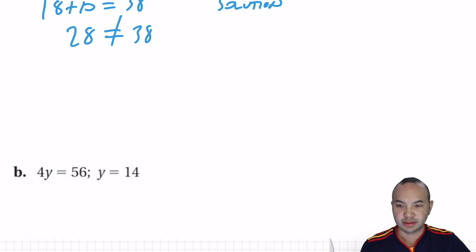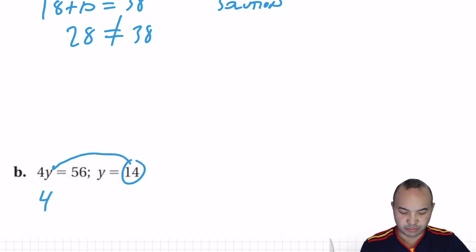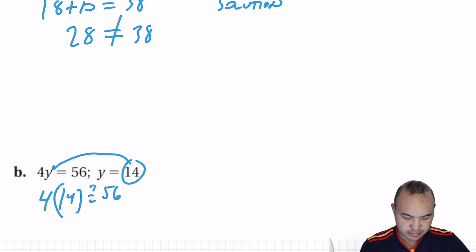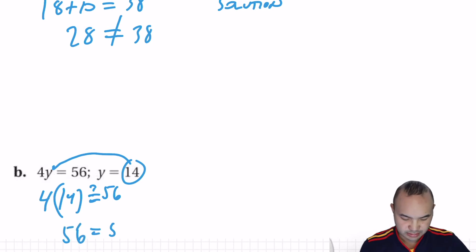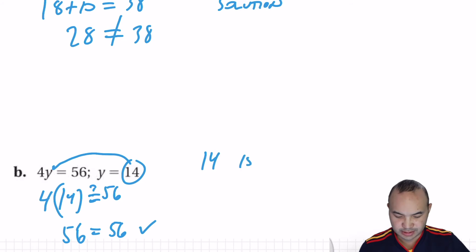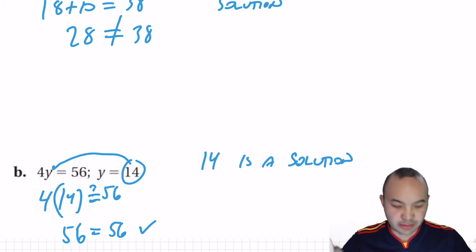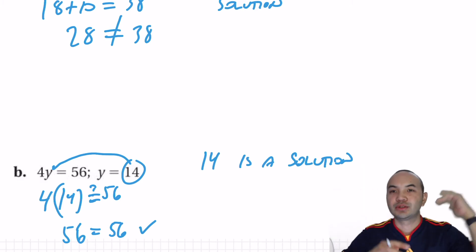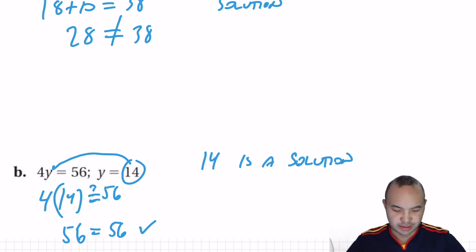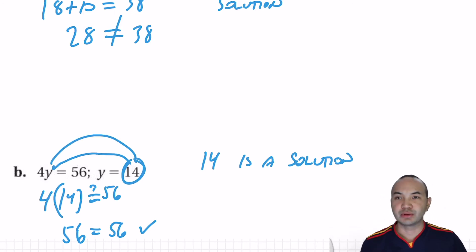Let's try 4y equals 56, with y equals 14. Plug in 14: 14 times 4 is 56. Check — 14 is a solution. That's how you check your answer. Once you do a problem and get y equals 14, to check your solution, just put that back into the original equation.